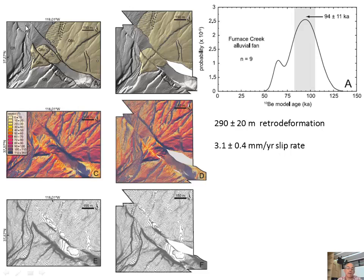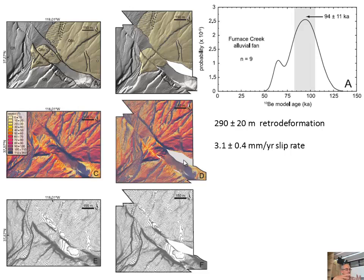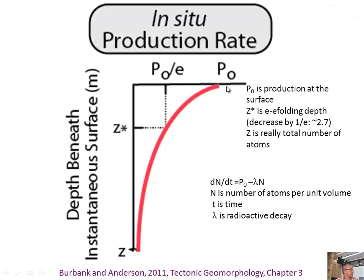They did the same on another nearby fan, which is broken by two faults. They tracked the drainage across the faults, matched it up along with the overall fan form, reconstructing an offset of 290 ± 20 meters. Dating nine boulders on top gave a 94 ± 11,000-year-old date, yielding a slip rate of 3 mm/year.